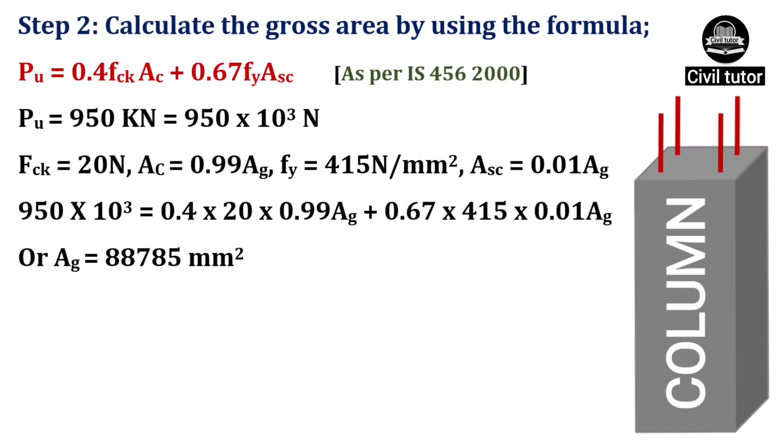As per IS 456 2000, the gross area is calculated by using the formula PU equal to 0.4 FCK AC plus 0.67 FY ASC, where PU is the ultimate axial load which is already given as 950 kN, which will be equal to 950 into 10 raised to power 3 N.